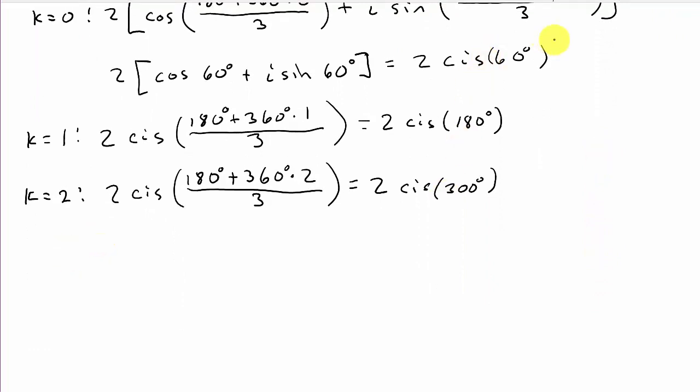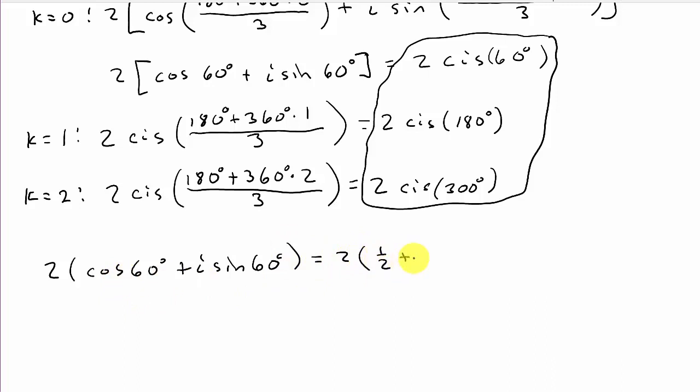So we can, you can leave them like this in this shorthand form. Or if the book or your teacher wants you to write it in rectangular form, then you would need to convert these to rectangular form. And the easiest way to do that is to look at it like this. So that's going to be 2 times, and then the cosine of 60 is 1 half plus i sine 60. The sine of 60 is square root of 3 over 2, and that's i. And so then we distribute the 2. So that's 1 plus i square root of 3. So there would be one solution.